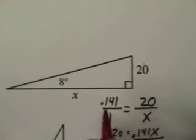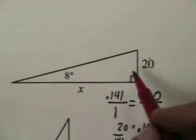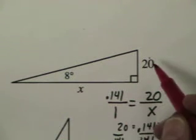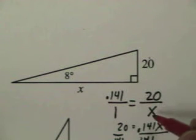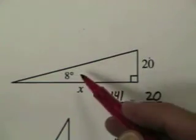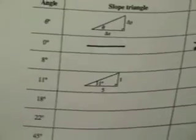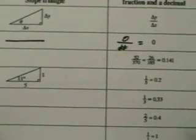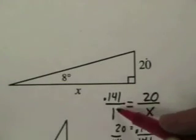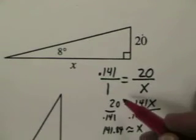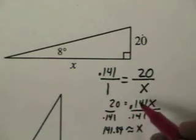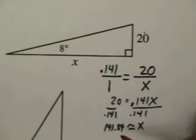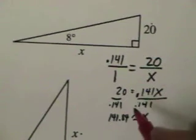Problem D gave us an angle, and we're missing a side piece. So we're going to write the part of the triangle we know, 20 over x. And then we're going to find 8 degrees in the table. And we see that it's going to be .141. So I put .141 over 1. Multiply it out by cross multiplying. 20 equals .141x, divide by .141, and I get 141.84.